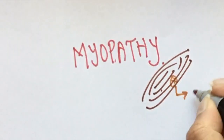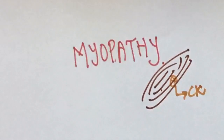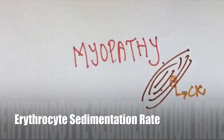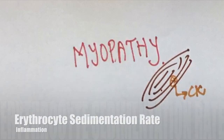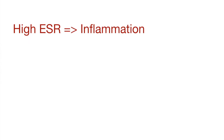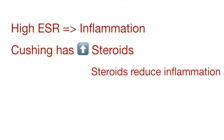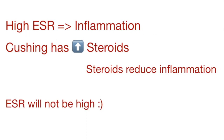CK stands for creatinine kinase, which is a component of muscles. So whenever there's damage to muscles, the CK leaks out from the muscle tissue and enters the blood — hence an increase in CK levels in the blood can indicate muscle damage. ESR stands for erythrocyte sedimentation rate; a high ESR indicates underlying inflammation.